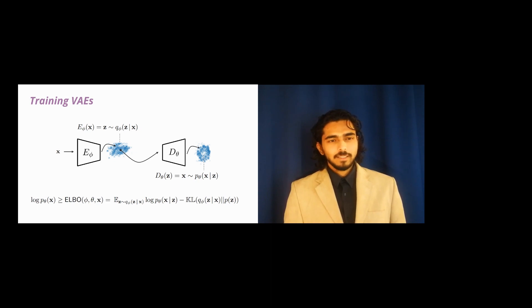VAEs are trained by maximizing the ELBO, which comprises two terms: the reconstruction loss and the KL divergence. The KL divergence is between a posterior and a fixed prior. This prior is generally assumed to be a Gaussian P, shown in orange here.